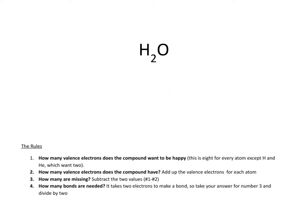Let's try water. Some of us probably already know the structure of water, but let's go through the steps and see if we get a correct diagram. Step one: how many does each atom want to be happy? Hydrogen needs two, hydrogen needs two, and oxygen needs eight. Remember, hydrogen and helium are happy with two because they're on the first energy level. Everything else wants eight to meet the octet rule. So two plus two plus eight makes twelve.